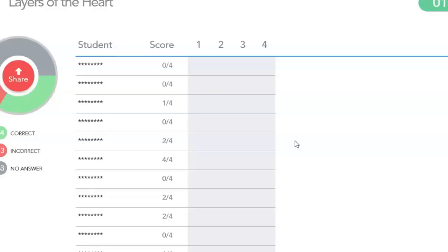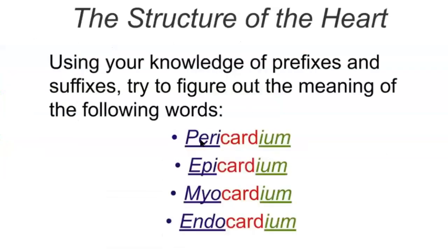There are three layers to the heart wall plus a sac the heart sits within — four terms total. 'Peri' means around, so the pericardium is the sac surrounding the heart. 'Epi' means above or upon — that's the outer layer of the heart wall. 'Myo' refers to muscle and 'cardi' refers to the heart, so myocardium is the muscle tissue — the middle layer. 'Endo' is innermost, so the endocardium is the inner lining.